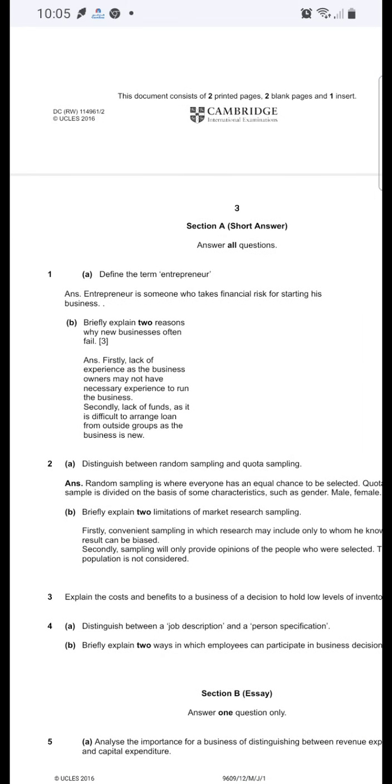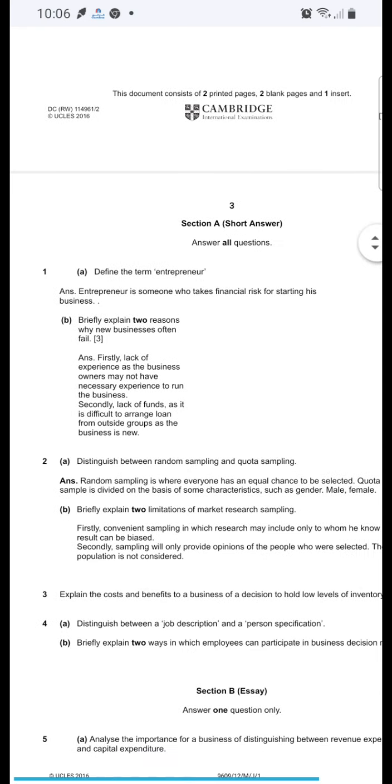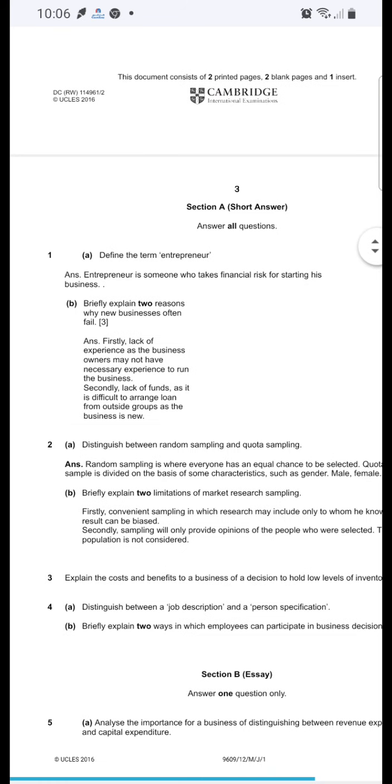Question number 1A: define the term entrepreneur. It's just two marks so no more details are required, just the keywords. The definition is entrepreneur is someone who takes financial risk for starting his business. So the keywords are 'who takes financial risk' and 'starting his venture or business'.